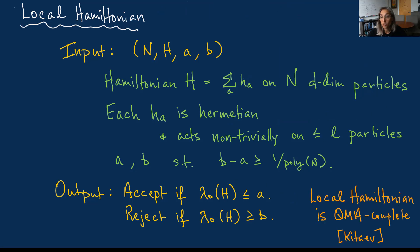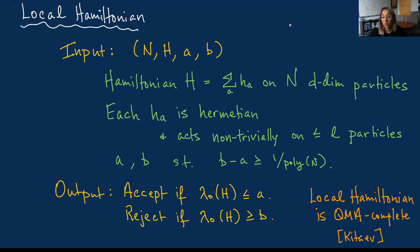At the same time, it's also a fundamental problem in numerical condensed matter physics. The Hamiltonian H represents the overall energy of the system, and it's a sum of terms representing local interactions between particles. It's of great interest in physics to understand the lowest possible energy state—the quantum state that minimizes the energy—which is the lowest eigenvalue of this matrix. The ground state tells you a lot about the physics of the problem, and a lot of the interesting physics happens at this low energy regime.